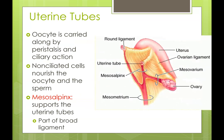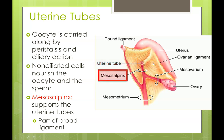Before talking about the uterus, let me discuss more features of the uterine tube. The oocyte is carried through by peristalsis and ciliary action in the fallopian tubes, and the non-ciliated cells nourish the oocyte and sperm. The broad ligament in yellow drapes around the fallopian tube — this portion is called the mesosalpinx — and it helps support the uterine tubes as part of the broad ligament.